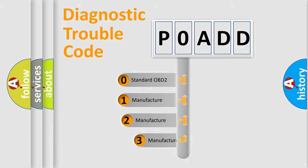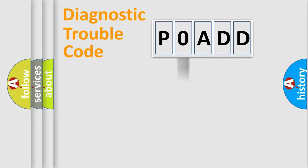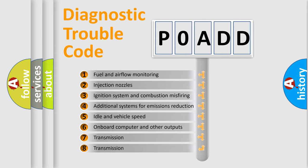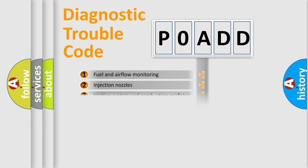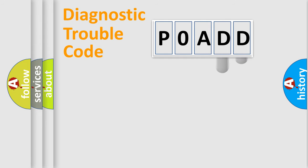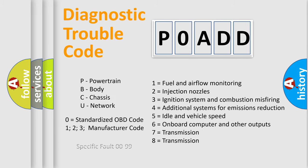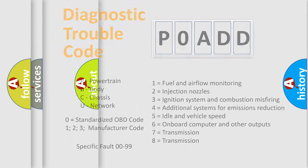If the second character is expressed as zero, it is a standardized error. In the case of numbers 1, 2, or 3, it is a manufacturer-specific expression of a car-specific error. The third character specifies a subset of errors. This distribution is valid only for the standardized DTC code, and only the last two characters define the specific fault of the group. This division is valid only if the second character is expressed by the number zero.